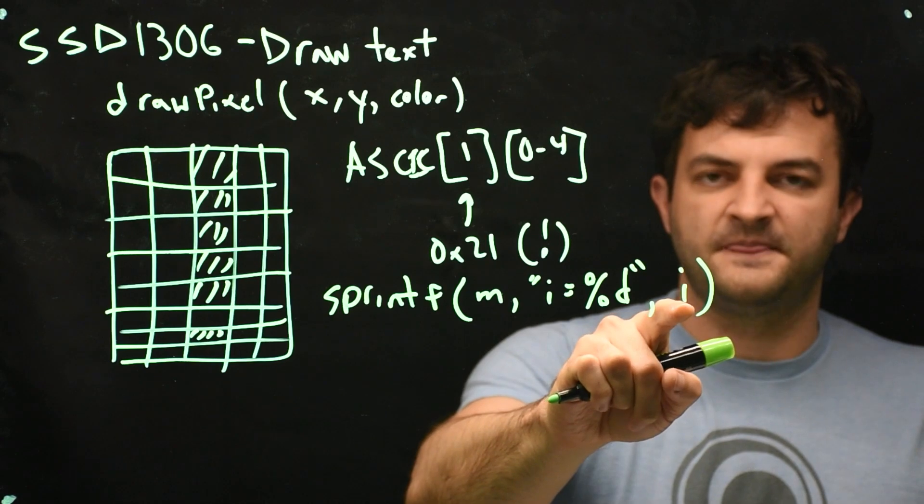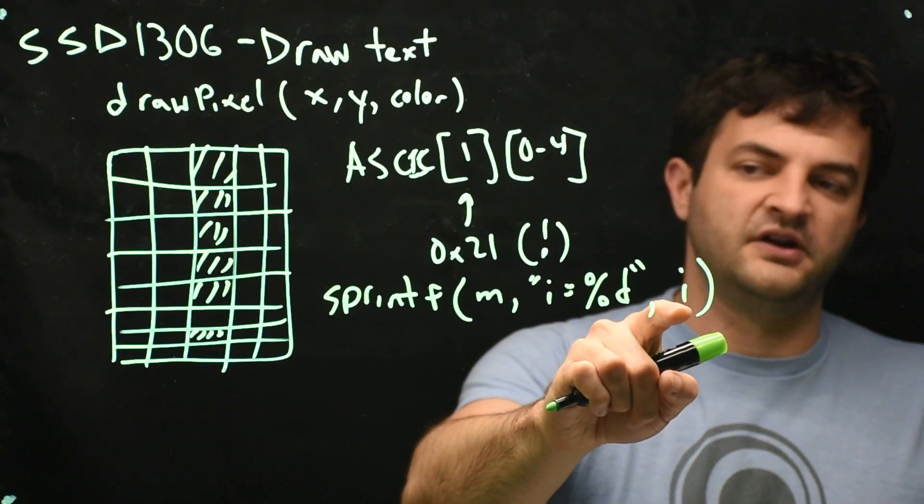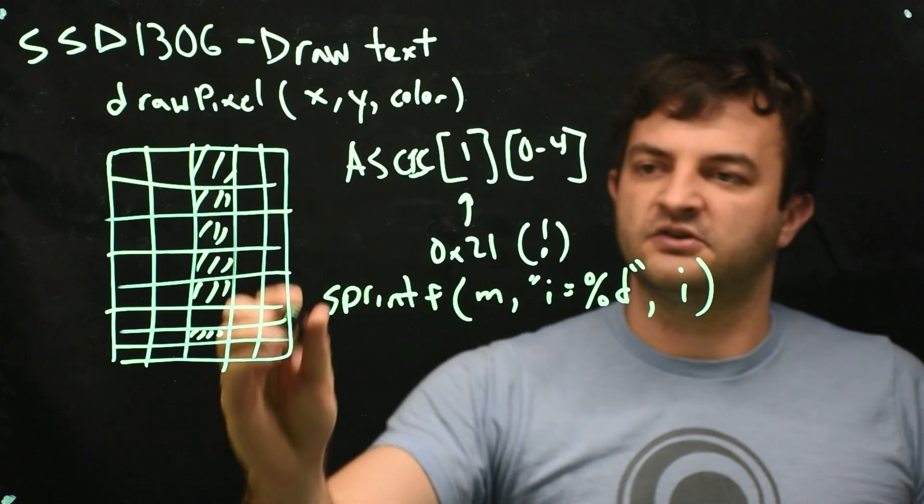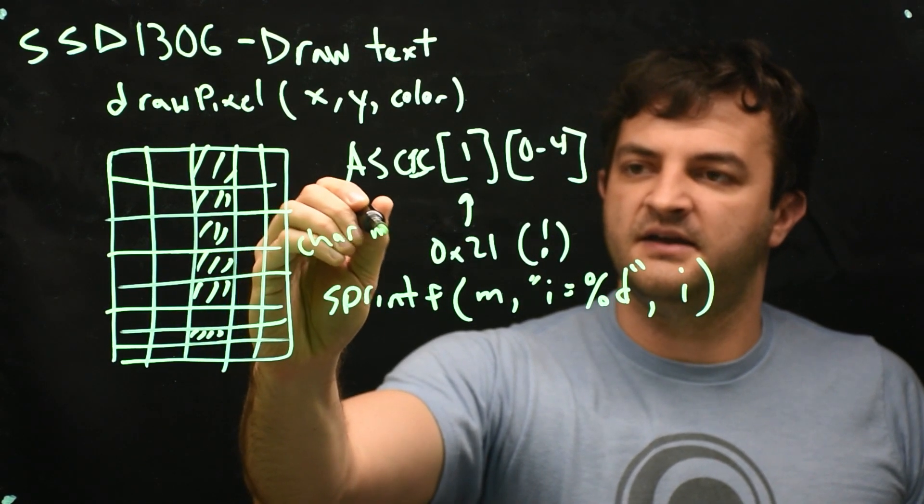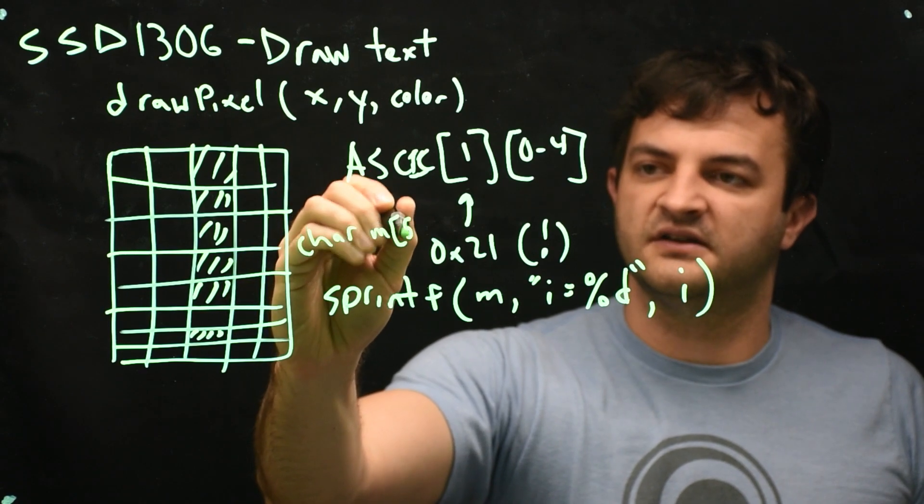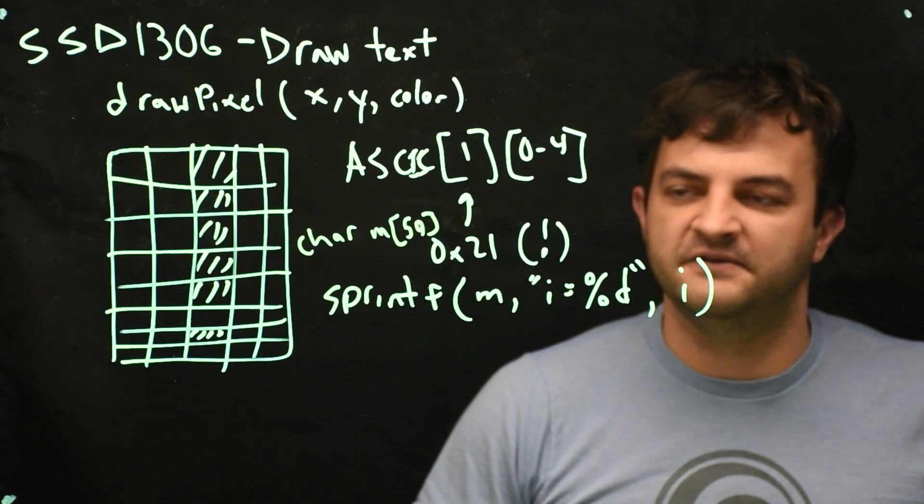So i is some integer, and it currently has a number in it. And m is going to be a character array. So before here, I would have to say char m with so many letters in it. I'll give it a nice big size of 50. We will never need 50, but just make it bigger than necessary.